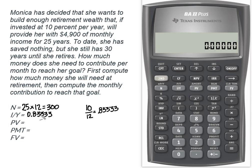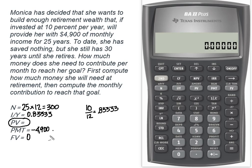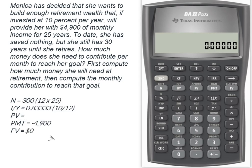The other thing that we know is that she wants to be able to take out a negative $4,900 every month. And we also know that she's going to spend all of her money. So what we're calculating is what does the present value of her retirement account need to be at 10% interest in order to give her a $4,900 a month retirement check. I've cleared my time value of money keys and I'm going to enter my values.